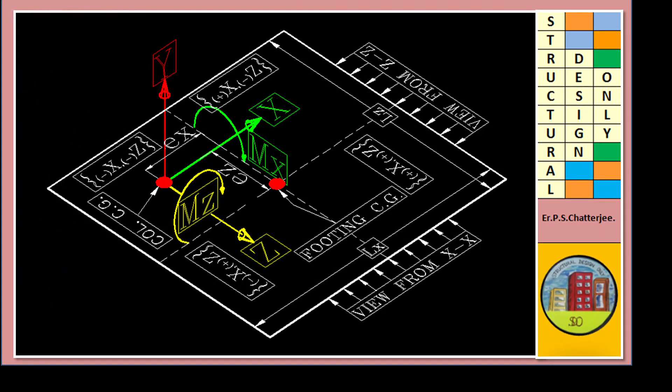This is isometric view of a footing from top. In this position, EX and EZ both positive. In this position, EX negative, EZ positive. In this position, EX negative and EZ also negative. In this position, EX positive and EZ negative.